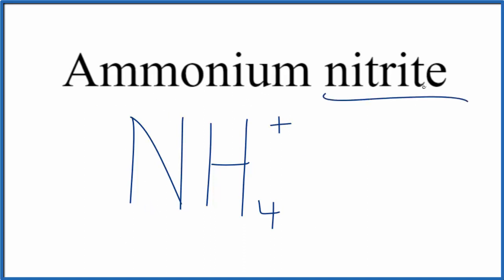Nitrite is not on the periodic table either. The ITE ending tells you it's a polyatomic ion. You need to memorize that the nitrite ion is NO2 with an ionic charge of 1-.